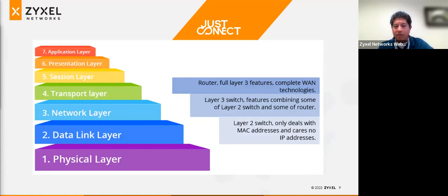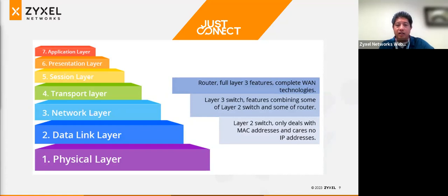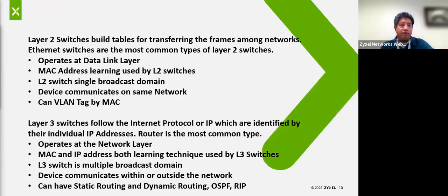Layer 3 switches typically have features combining Layer 2 and some router features. Pure Layer 2 switches only deal with MAC addresses and have no understanding of IP addresses. The number one question I always get is: do I need a Layer 3 switch to do VLANs? The answer depends. If you're trying to do it at an IP level, yes you need Layer 3. But if you're just doing basic VLANs using MAC addresses or trying to VLAN out ports, then Layer 2 is perfectly fine — and that's what it's made to do.